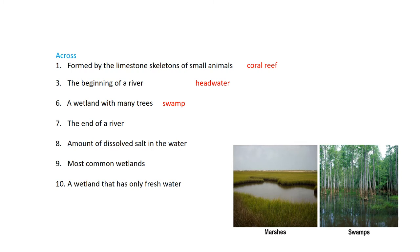Do you see the picture on the lower right here? That's a swamp, and on the left is a marsh. What's the main difference between a swamp and a marsh? Swamps have lots of trees; marshes have very few. Seven across, the end of a river is called the mouth. Number eight, the amount of dissolved salt in the water is referred to as the salinity of the water. Saltwater biomes usually have three percent or more salinity. Freshwater biomes have less than one percent salinity. Number nine across, the most common wetland is called a marsh. Number ten across, a wetland that has only fresh water is called a bog. Bogs are found in cooler northern climates, and most of the water in bogs comes from rain, which is why a bog will always have fresh water.